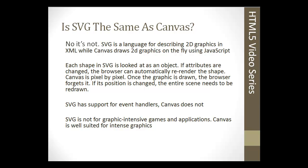The differences between SVG and Canvas: they're not the same. SVG is a language for describing 2D graphics in XML, and Canvas draws 2D graphics on the fly using JavaScript. Each shape in SVG is looked at as an object — if attributes are changed, the browser can automatically re-render the shape. Canvas is pixel by pixel; once the graphic is drawn, the browser forgets it. If its position is changed, the entire scene needs to be redrawn. The browser will re-render SVG graphics but will forget Canvas.